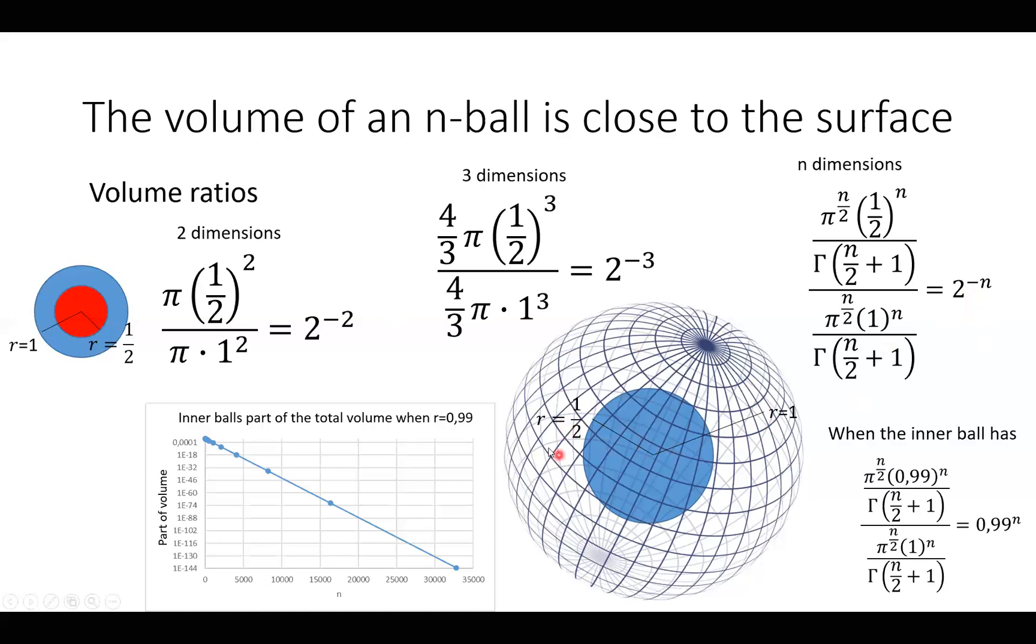And if we take the inner ball with r equals 0.99 and up in n, which is an n-ball, we see that it goes like 0.99^n. And the inner ball parts of the total volume will then be with r equals 0.99. Here we see the part of the volume, here is the n.